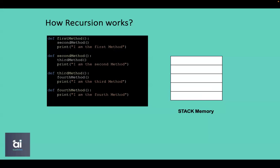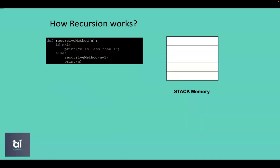Now it should be clear how method execution is managed in stack memory. Let's see how a recursive method is stored in stack memory. As an example, we will look at this recursive function that calls itself.